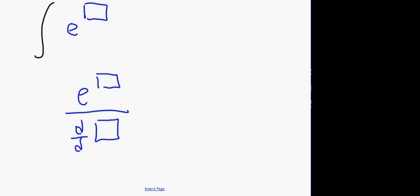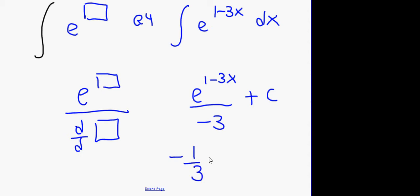So, let's try another one. For example, we could try question 4. Question 4 is e to the power of 1 minus 3x dx. In this scenario, it's going to be e to the power of the box. And then, what do we do to the box? What's in the bottom? Derivative of the power. Plus c. And then, we can also call that minus one-third e to the 1 minus 3x plus c. Is everybody happy with that? We'll do one or two harder ones in a minute.